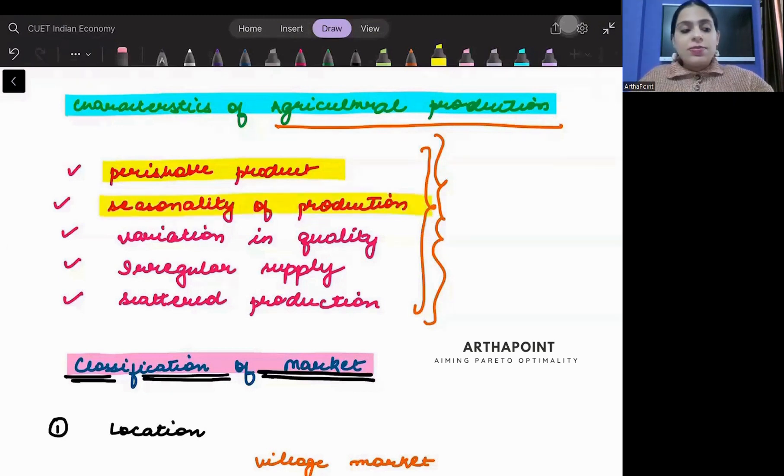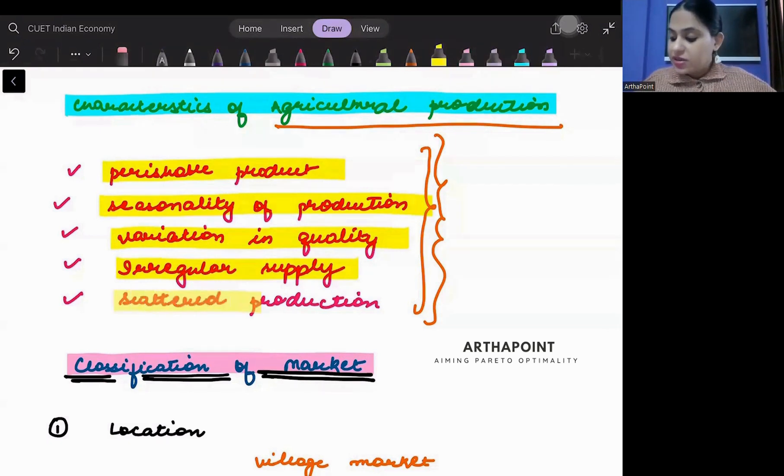Seasonality of production means the production is seasonal. It's not that you can do it anytime. We need proper rainfall, we need proper sunrise, et cetera. Variation in quality means even if I am producing apple and you are producing apple, the quality will differ. Irregular supply means supply is not regular.